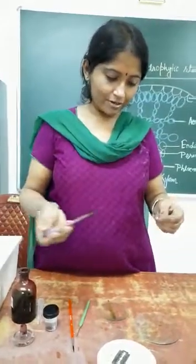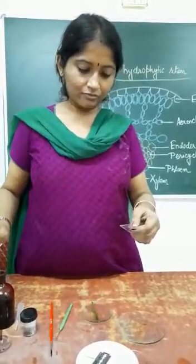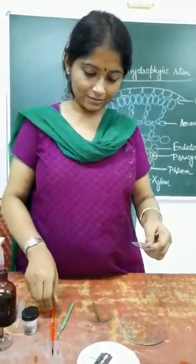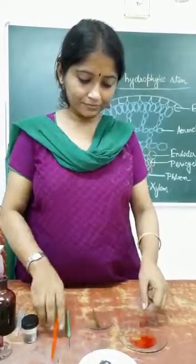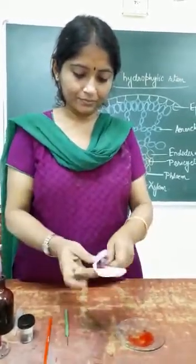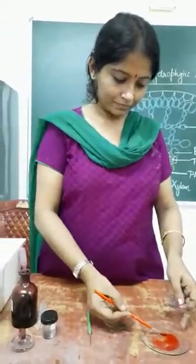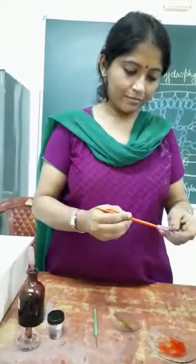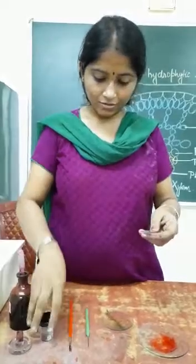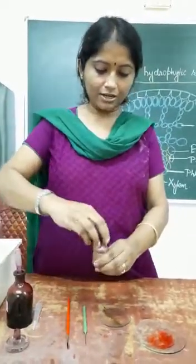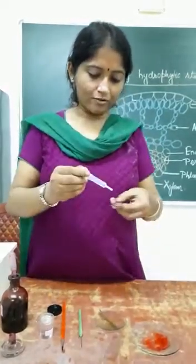I am using the safranin stain. I shall put the safranin stain on the section and leave it for 30 seconds. Then de-stain it and take the stained section on the slide. Use glycerol as a mounting agent and leave a drop of glycerol on the section.